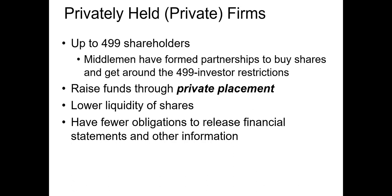One big benefit that private firms have versus publicly traded firms is that they have fewer reporting obligations. For example, we only know the sales revenue for private firms like Cargill or Albertsons — we don't know their total assets or total debt because they're not required to disclose them.